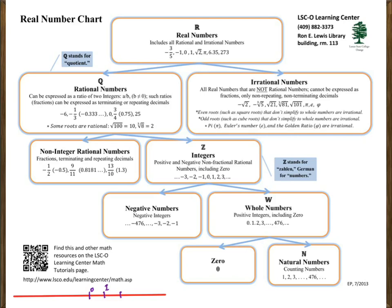Now, real numbers are divided into two parts: the first is the rational number and the second is the irrational number. A rational number is a number which we can write in the form a/b (or p/q), where b is not equal to zero, and a and b are integers. Such a ratio or fraction can be expressed as a terminating or repeating decimal. These numbers are called rational numbers.